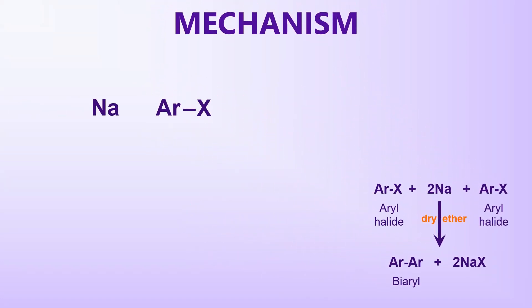Let us explore the mechanism of the Phytic Reaction. Initially, a single electron is transferred from sodium metal to the aryl halide, causing heterolytic cleavage of the Ar-X bond. This results in the formation of an aryl free radical and a halide ion. The transfer of one electron is depicted by a fish-hook arrow in orange color, while the transfer of two electrons is shown by a normal arrow in pink color.